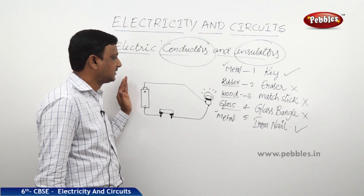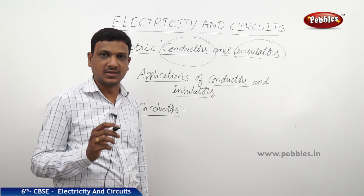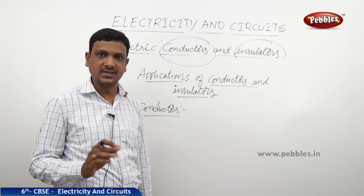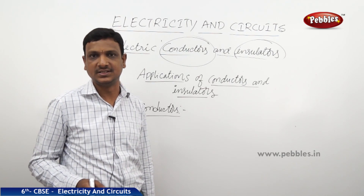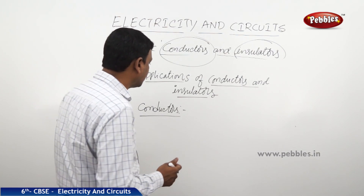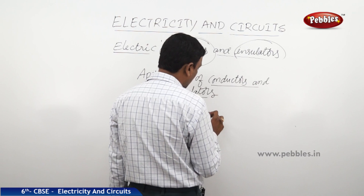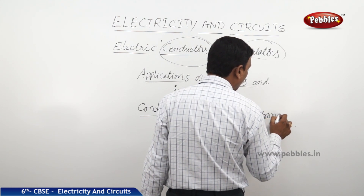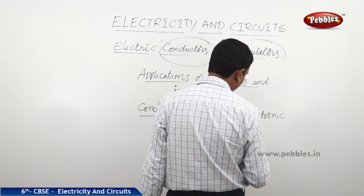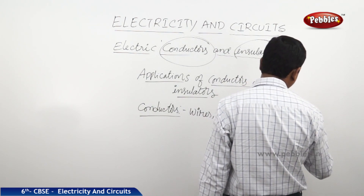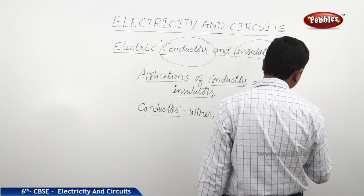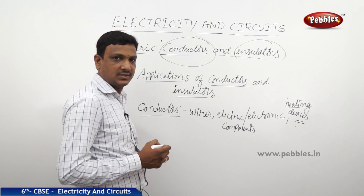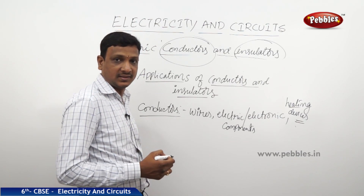So this is all about electric conductors and insulators. We have seen what are conductors and what are insulators. Now let us see some of the applications of conductors and insulators. Both of them — conductors as well as insulators — have their own advantages in the field of electricity. Conductors are used to make electric wires, that is to conduct electricity, and also electronic components and heating devices. When a building is constructed, wiring is done so that switches, lights, fans, everything are fixed there. For that wiring, we use a good conductor.